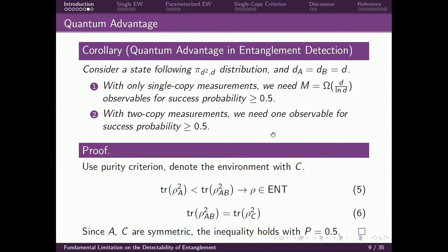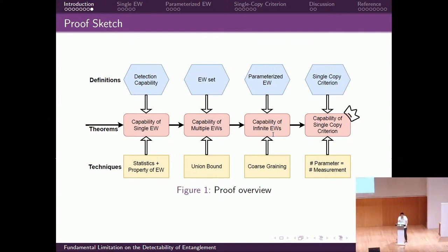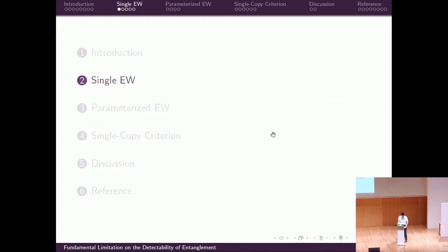Here are all the theorems and corollaries. Now let's begin our proof. The proof contains four stages. In each stage we bound the detection capability of some kind of entanglement detection criterion — from the simplest, a single entanglement witness, to multiple entanglement witnesses, to infinitely many entanglement witnesses, and finally we bound the detection capability of any single-copy criterion.